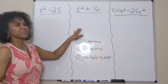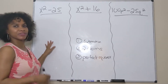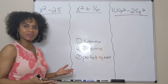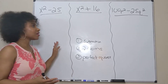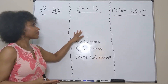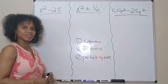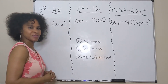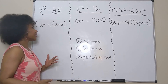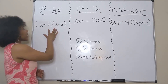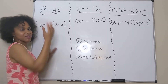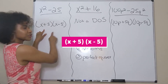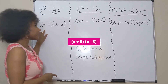Now I have three practice problems for you to try on your own, so go ahead and pause the video and try to factor these three difference of squares. The first one you should have gotten (x + 5)(x − 5), or vice versa.